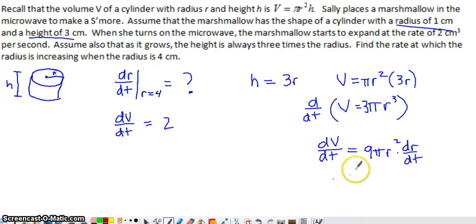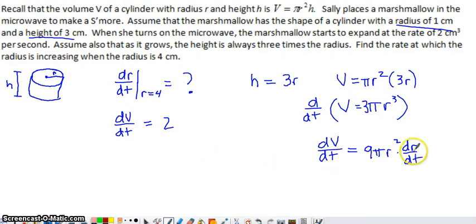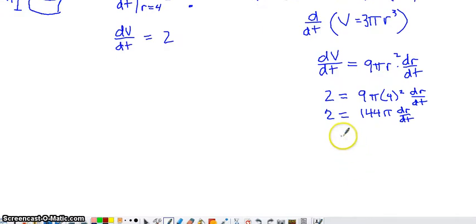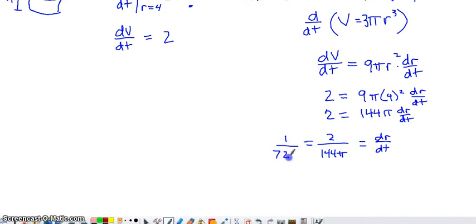Now we're ready to substitute: we put 2 in place of dV/dt, and 4 in place of r at the instant we want. That gives us 2 equals 9π times 4² times dr/dt. Since 16 times 9 is 144, we get 2 equals 144π times dr/dt. So dr/dt equals 2 divided by 144π, which reduces to 1 over 72π. That's a pretty small value.